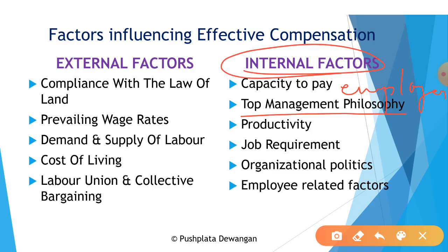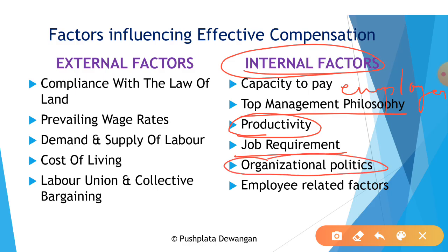The third internal factor is productivity — to achieve the best results from workers and motivate them to increase efficiency, wages need to be productivity-based. The fourth is job requirement — measures of job difficulty provide a basis for determining the relative value of one job against another in an enterprise. The fifth is organizational politics — compensation surveys, job analysis, job evaluation, and employee performance are all involved in wage and salary decisions, and political considerations may enter the equation.